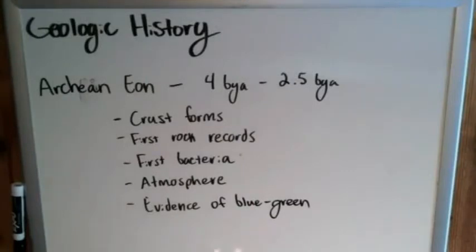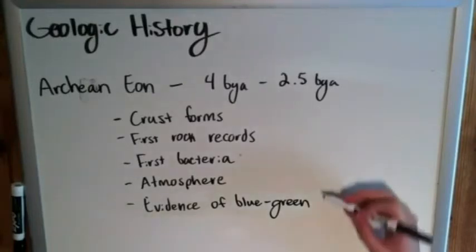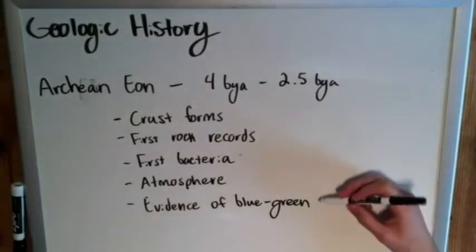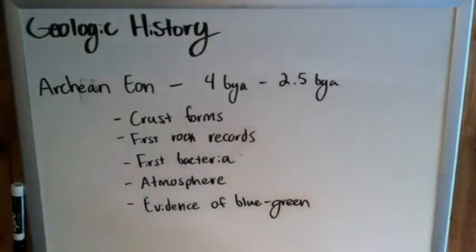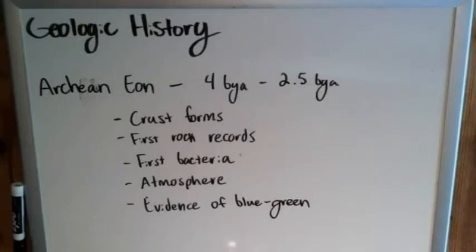I'd encourage you to do more research on blue-green algae because it is pretty interesting — maybe I'll do a future video on it. But to keep things relatively short, the Archean Eon's big takeaway is the formation of the crust and atmosphere, offering our first forms of life: notably bacteria and other single-celled organisms.